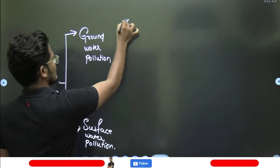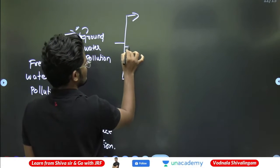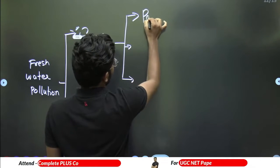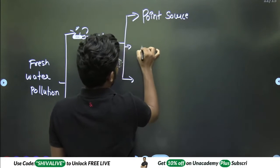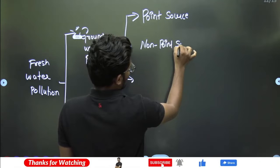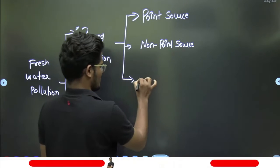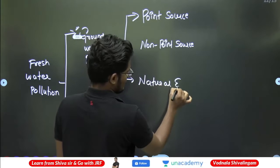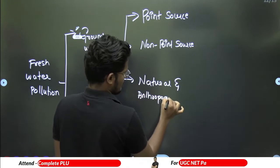Groundwater pollution is again divided into three parts — how the groundwater will get contaminated or get polluted due to three things: point source, nonpoint source, and natural and anthropogenic sources.